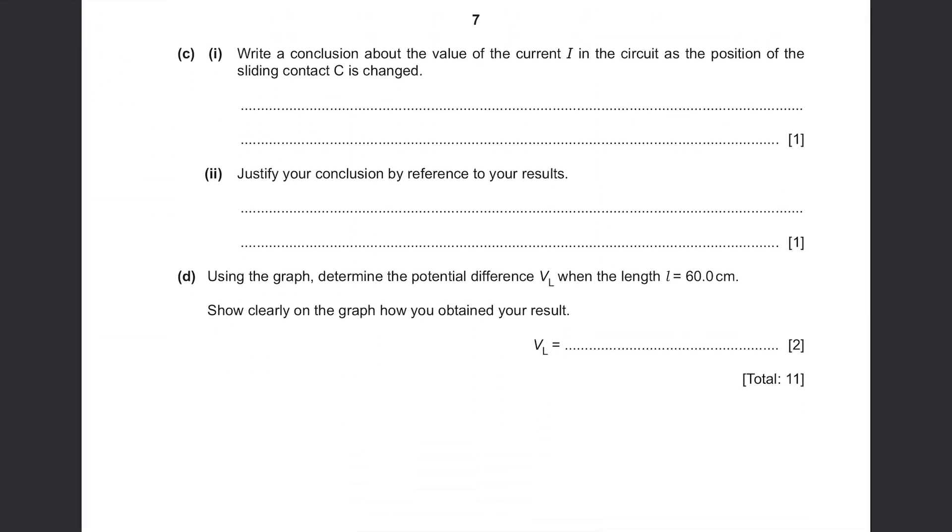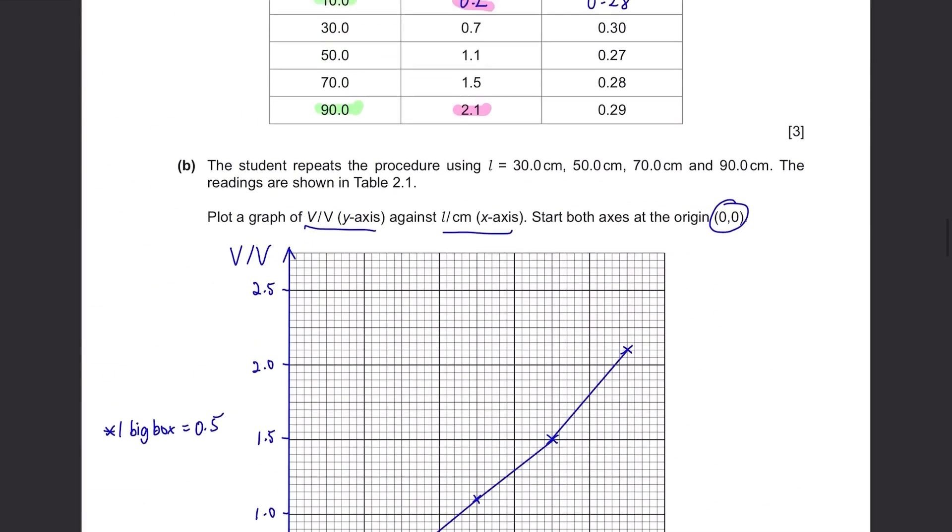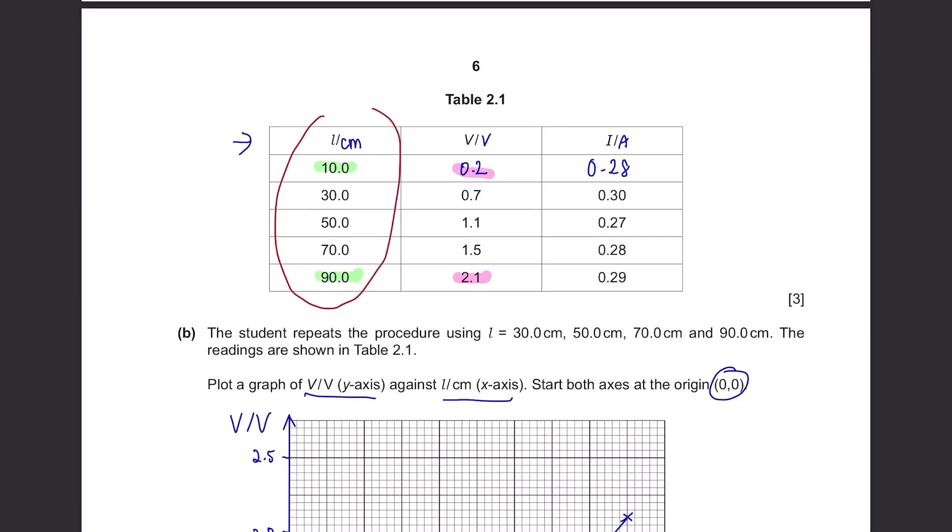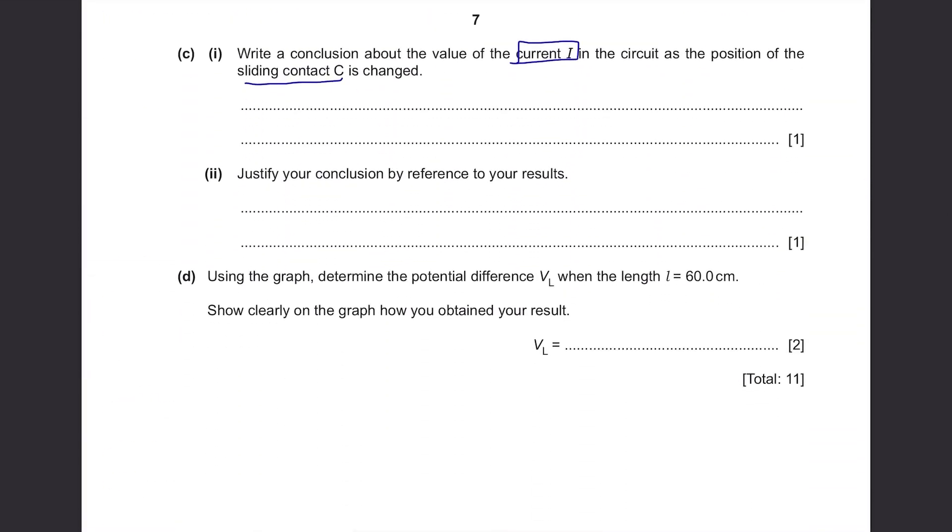Part C. Write a conclusion about the value of the current i in the circuit as the position of the sliding contact c is changed. The position of the sliding contact c changed means when the length L here is changed. So what happens to the current i when this is changed? You can see that the values of i are almost constant all the time so the conclusion is that i is constant even though the position of the sliding contact c is changed.